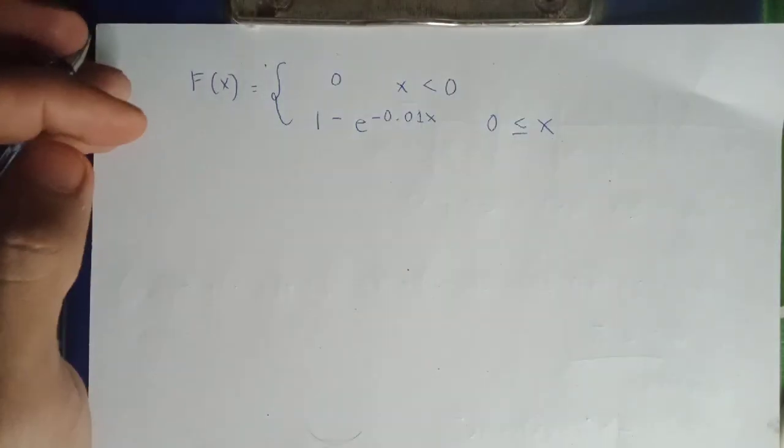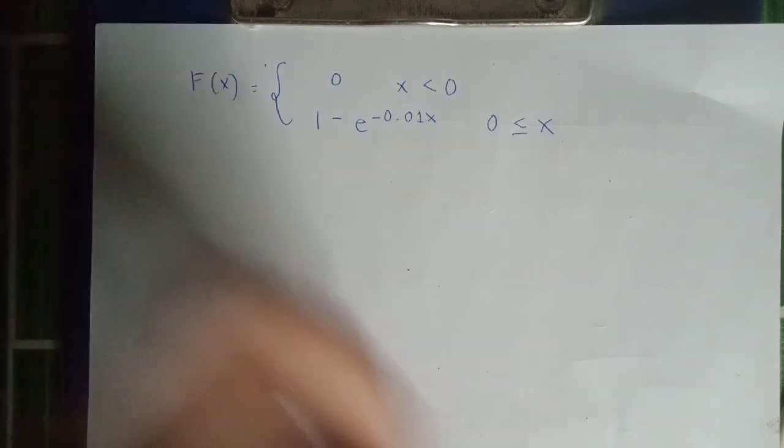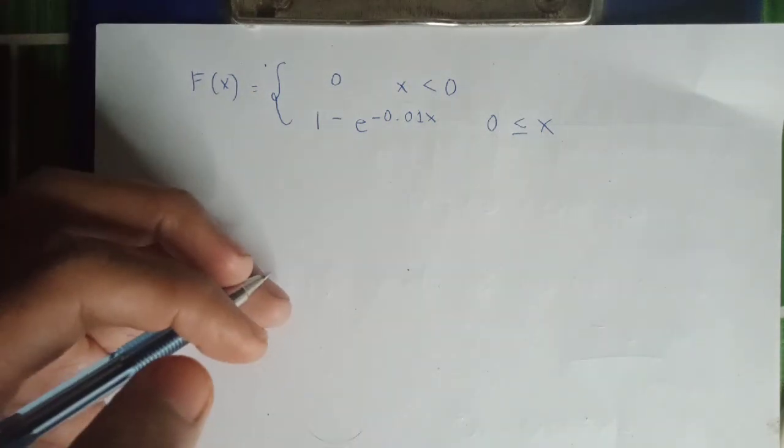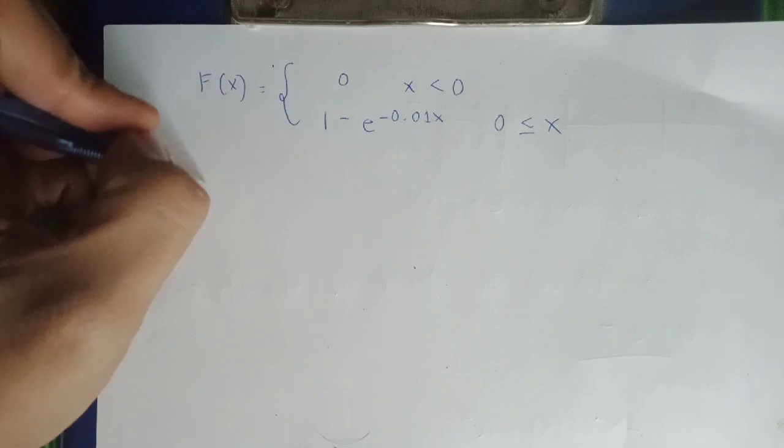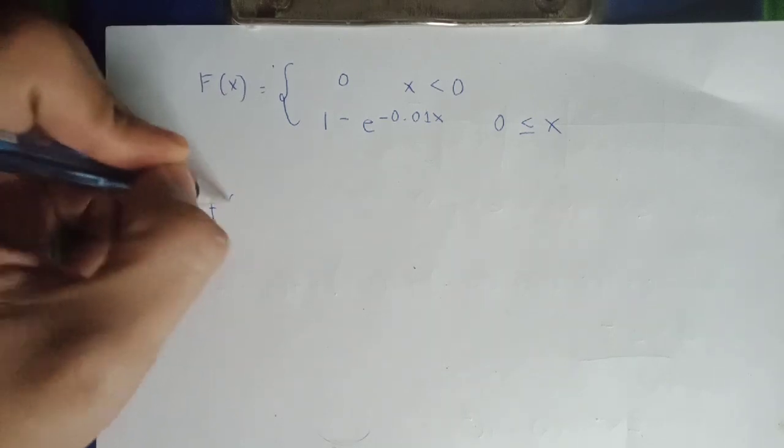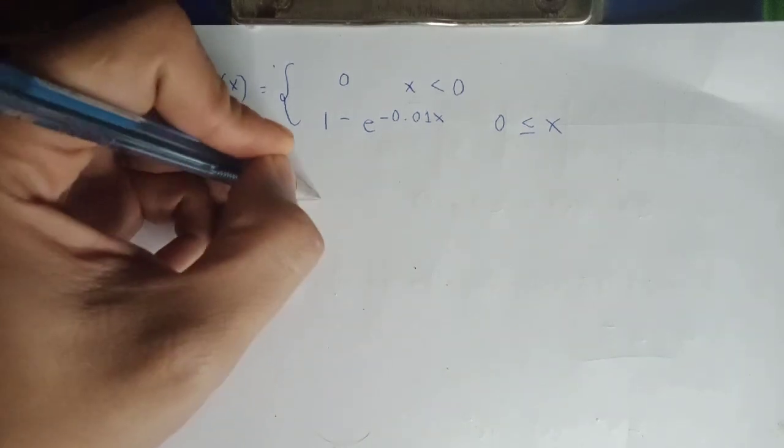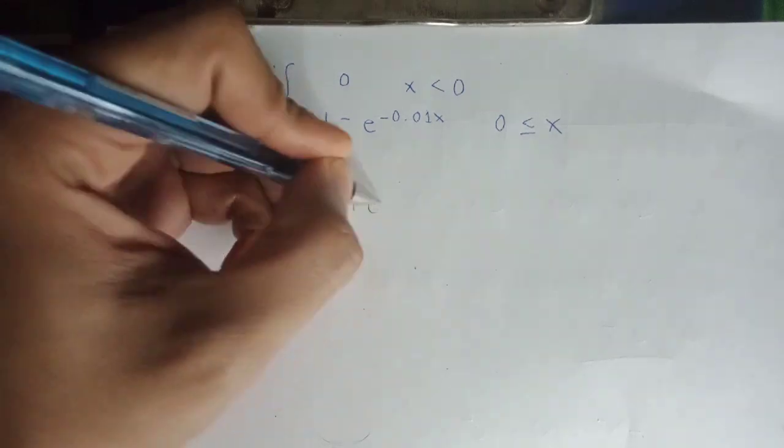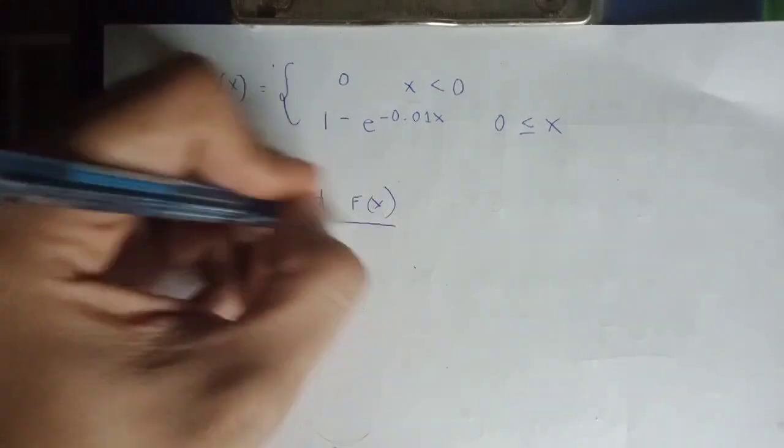Given na yung given na hanap. Ang kinahanap dito is yung probability na yung reaction makukumpleto within 200 milliseconds. In this kind of problem, ang gagamitin natin yung differentiation.